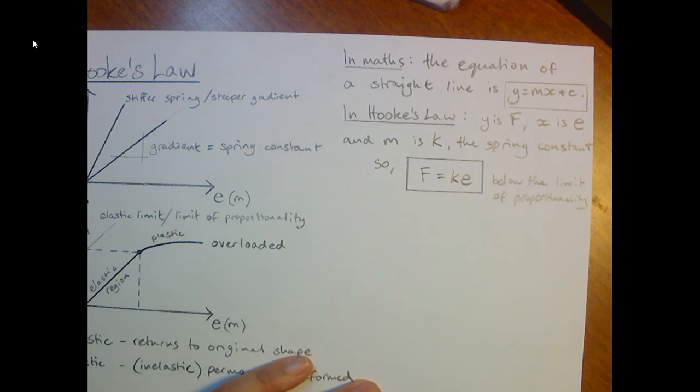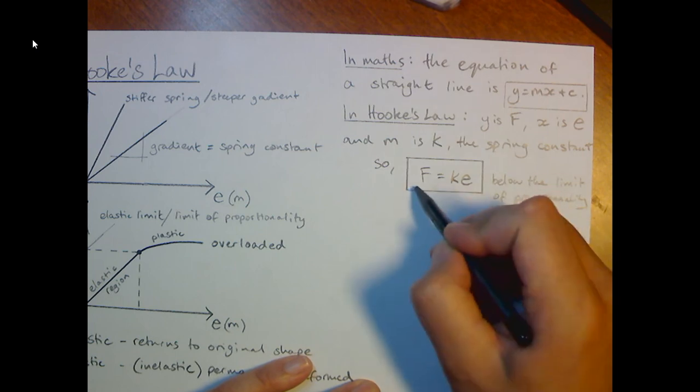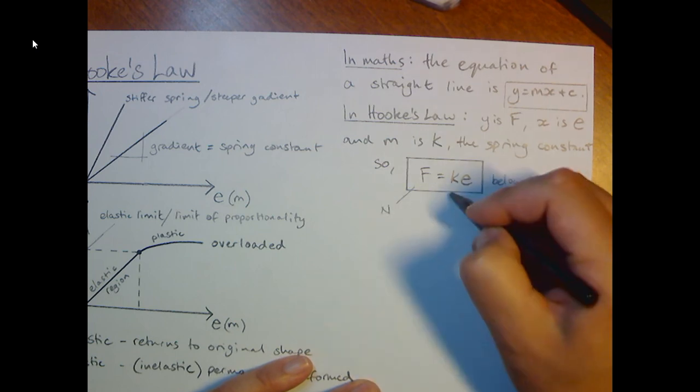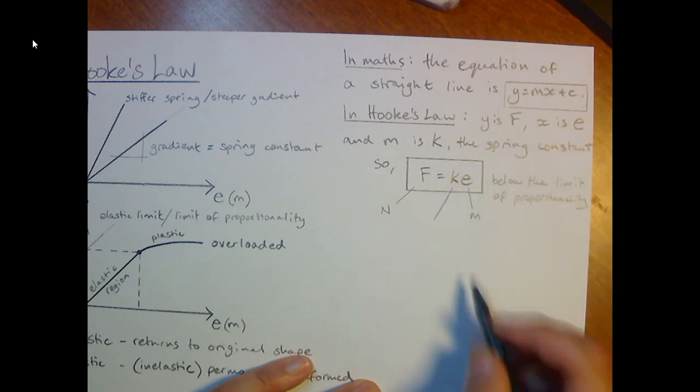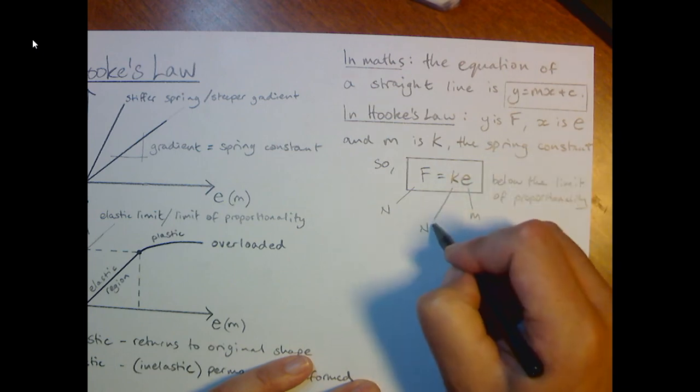So if we remember that this works for the straight line part of the graph, then we're good. And it all works out if we use the standard units for force, which are newtons, for extension, which is meters and for the spring constant, which is newtons per meter.